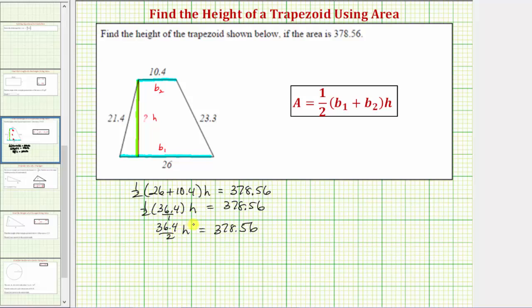36.4 divided by two is equal to 18.2, so we have 18.2h equals 378.56. Of course, if we need to, we can show this quotient, 36.4 divided by two.